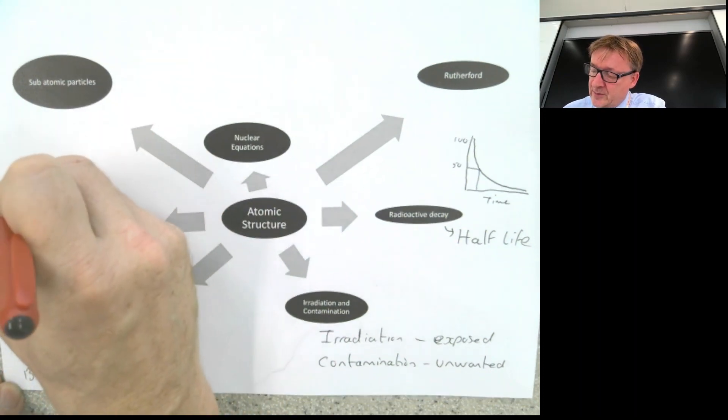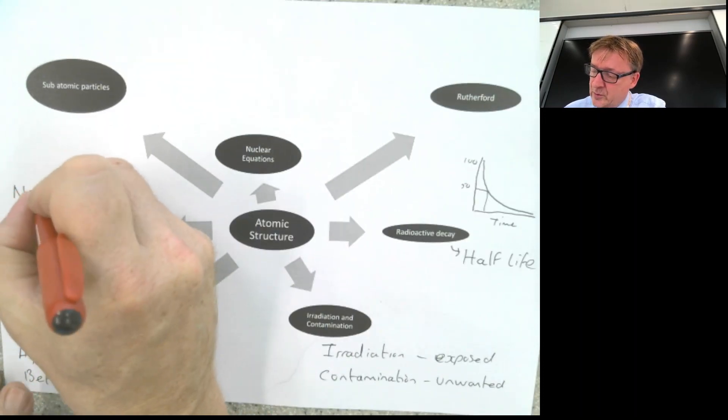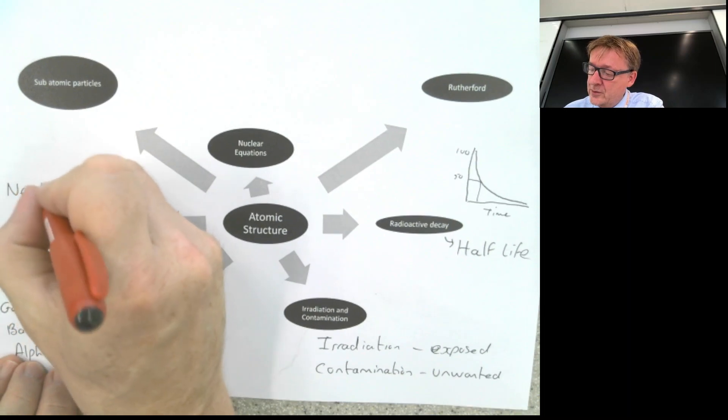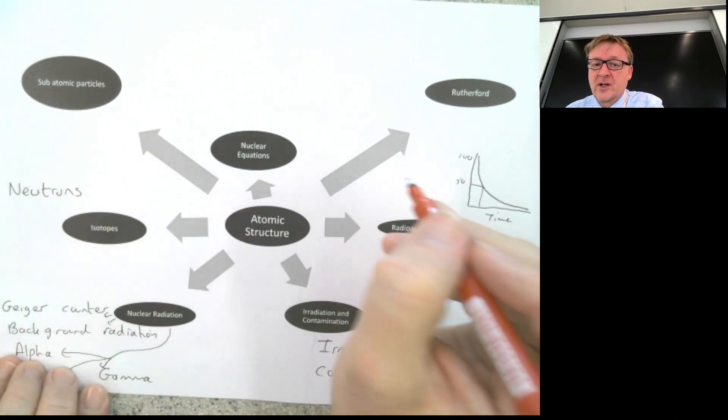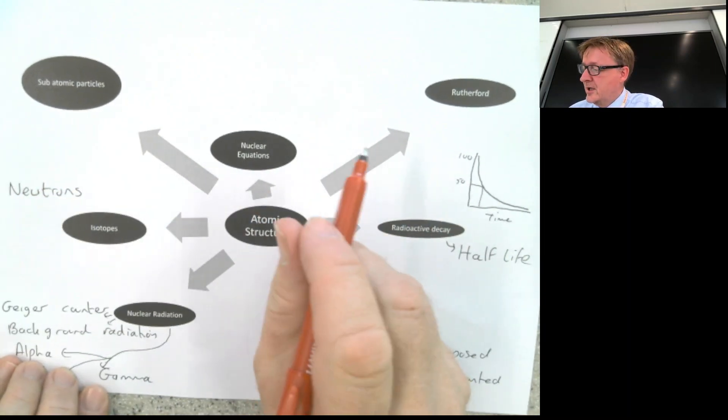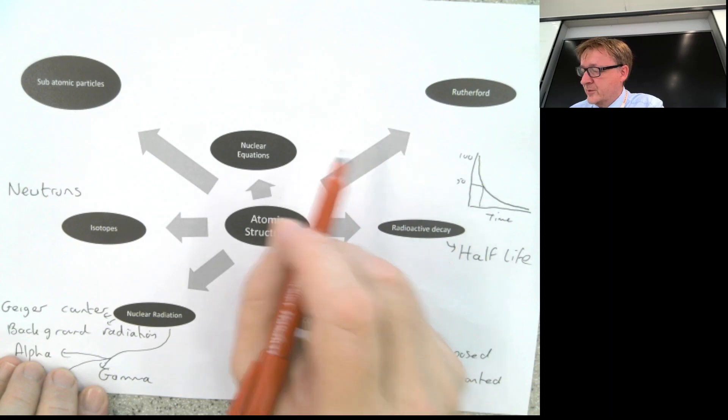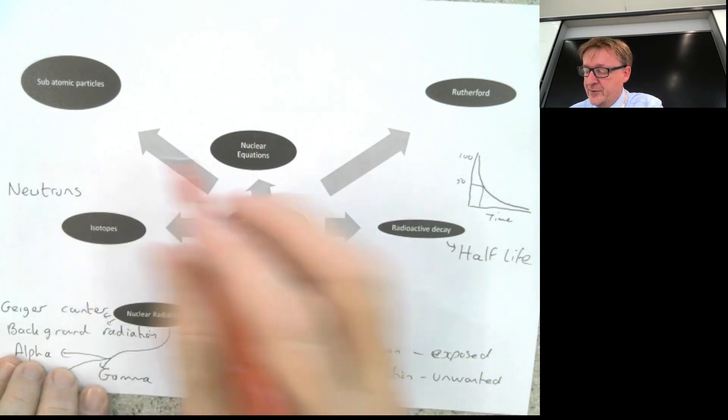Isotopes. I'm literally just going to write down the word neutrons. Because basically an isotope is two or more elements with the same number of protons, but a different number of neutrons.